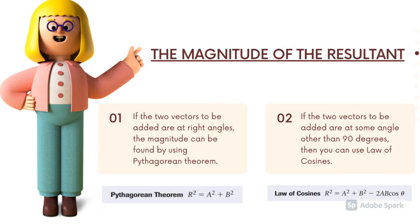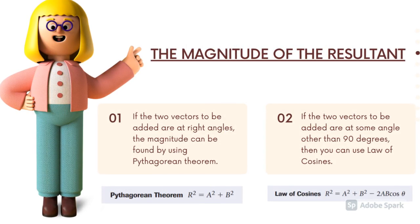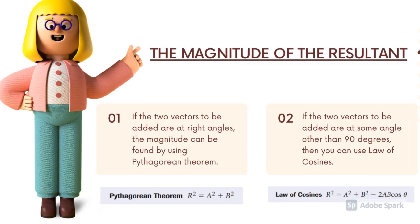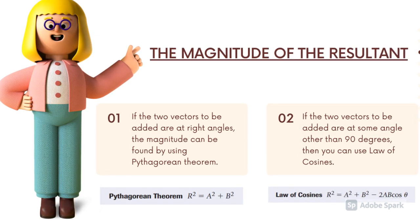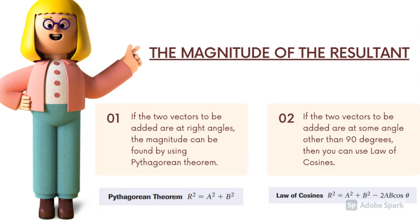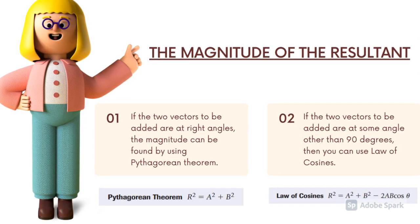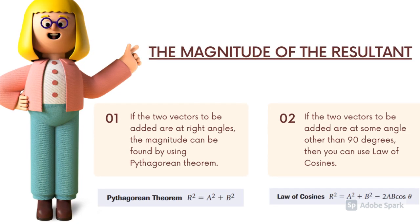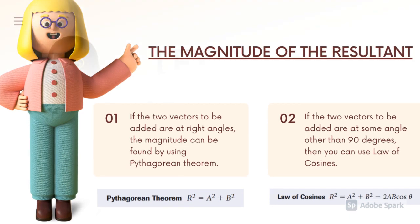To compute the magnitude of the resultant vector, consider the following conditions. First, if the two vectors to be added are at right angles, the magnitude can be found by using the Pythagorean theorem. Second, if the two vectors to be added are at some angle other than 90 degrees, then you can use the law of cosines.